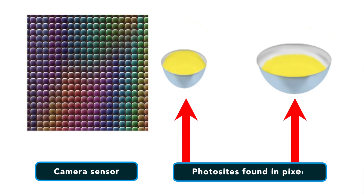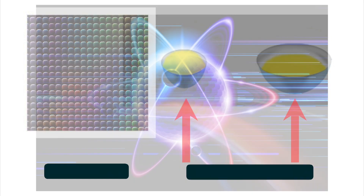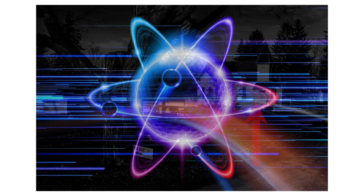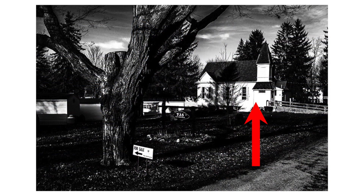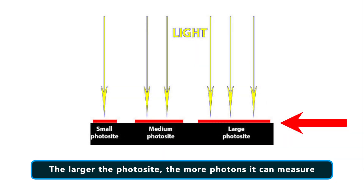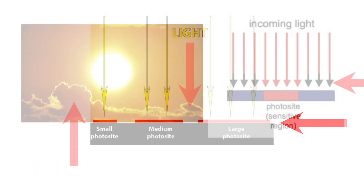In every pixel, there is a small pit called a photosite that measures photons, which are the little bundles of energy in which light travels, to determine how bright or dark something is. So, the larger the photosite, the more photons it can measure.